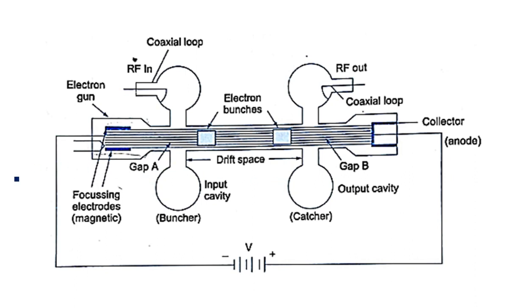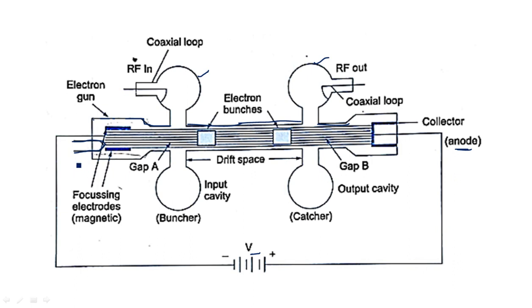This is the construction of the klystron amplifier having two cavities — the buncher cavity acting as input cavity and the catcher cavity acting as output cavity. The electron gun is placed inside the glass tube, which runs in a straight line from input to output. This glass tube is known as the klystron. The electron gun is energized with input voltage V, connected to the cathode side, while the other side has the anode kept at positive potential with respect to the cathode.